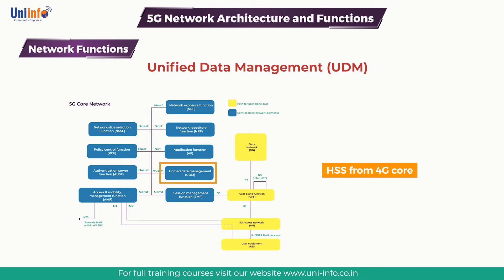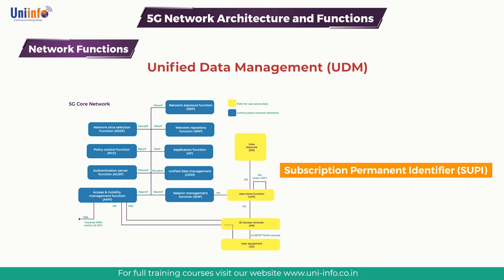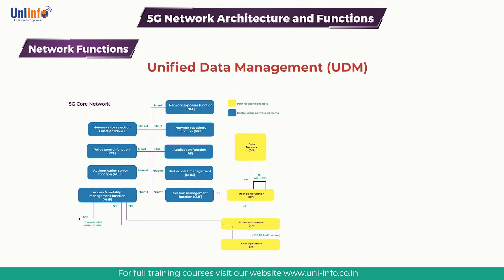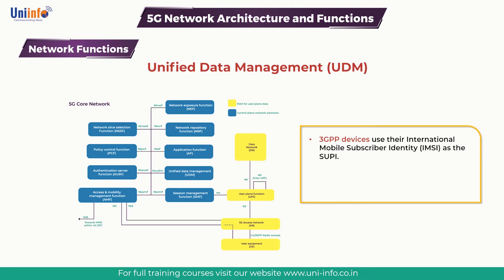The UDM manages subscriber data and may also store subscriber data. The subscriber data can be stored locally within a UDM or it can be stored within a Unified Data Repository. The latter solution allows multiple UDMs to access the subscriber data from a central storage location. The Subscription Permanent Identifier is managed by the UDM. 3GPP devices use their International Mobile Subscriber Identity as the SUPI.